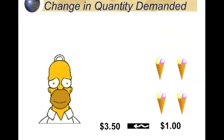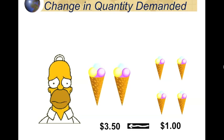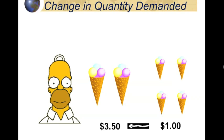What's going to happen when the price goes back up to $3.50? Well, Homer's now going to consume less, and that's again pointing out the notion of the law of demand. The cool thing about demand and the law of demand is that we can actually quantify it — we can jot it down in a table form, and then graph it.